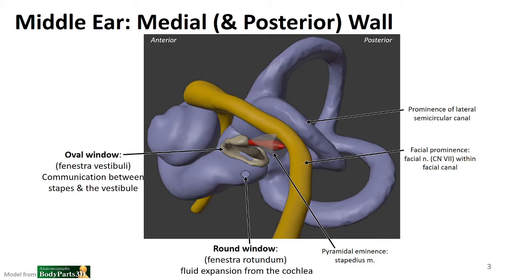You'll remember this image from the very first video of this series showing the different walls. We are standing in the middle ear looking toward the medial wall with the tympanic membrane at our backs. What we can see is the point where the stapes contacts the oval window — this footplate of the stapes contacting the oval window. We can't necessarily see it here because it is covered by the footplate of the stapes. This is the point where the ossicle chain will communicate into the vestibule and onwards toward the cochlea. Just inferior to the oval window we find the round window, which will be important in terms of fluid expansion from the cochlea.